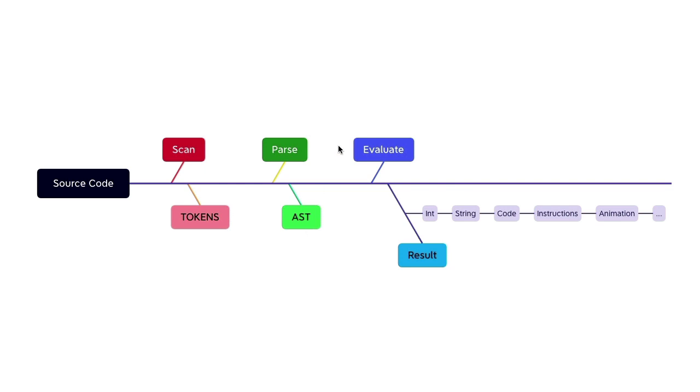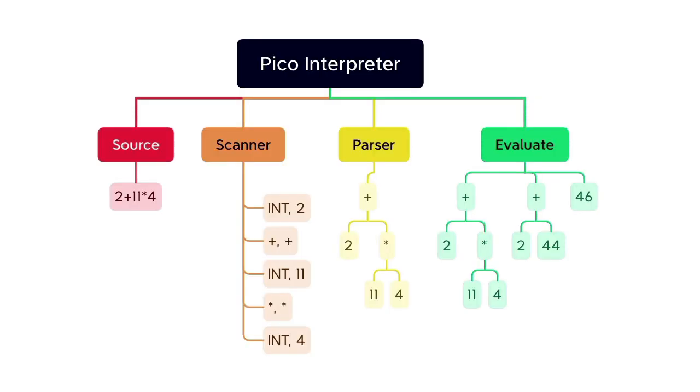Now this result can be anything - an integer, a string, a piece of code, instructions to control a robot, an animation, an image, or anything else. In fact, it is this wanted result that should govern what programming language you want to create. Now let's take this process and apply it to our simple languages.